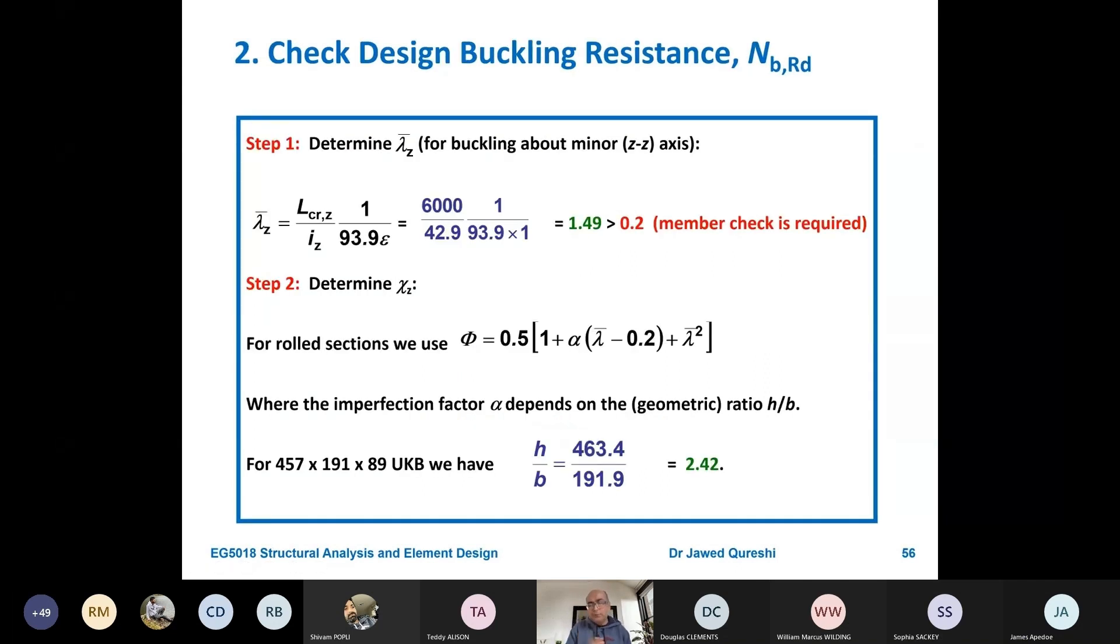The next thing is to work out buckling resistance. But before that we have to see if buckling resistance is required or not. And the key thing to remember here is that this is a direct formula for lambda dash Z in minor axis. LCR is the buckling length which we are using one times L, six meters, converting it into millimeters comes out to be 6000. I_Z is radius of gyration in Z direction or minor axis direction. Note that it is given in centimeters in the section table but you have to convert it into millimeters otherwise you'll get a wrong answer. 42.9 and again 1 over 93.9 comes from the formula. Epsilon we worked out a little earlier. Lambda dash Z which is slenderness is 1.49 which is greater than 0.2. It means that buckling resistance needs to be checked out for this column.